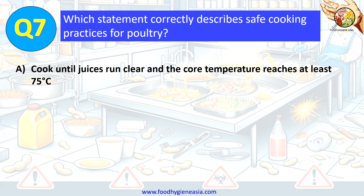The correct answer is A. Cook until juices run clear and the core temperature reaches at least 75 degrees Celsius.